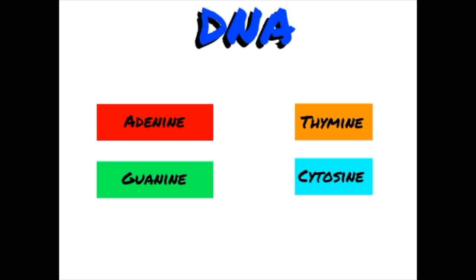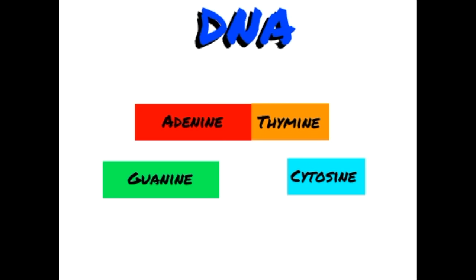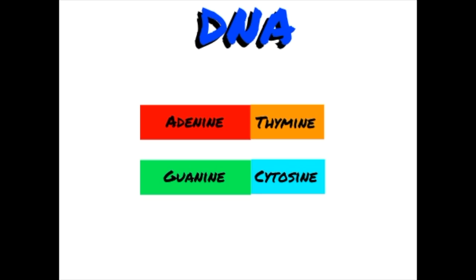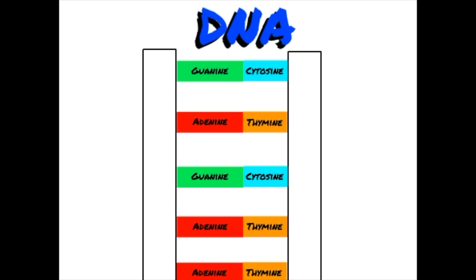DNA is made up of four nitrogenous bases. Adenine and thymine always pair together because of attracting charges, and guanine and cytosine always pair together. Each rung of the DNA ladder is made up of one of these pairs.